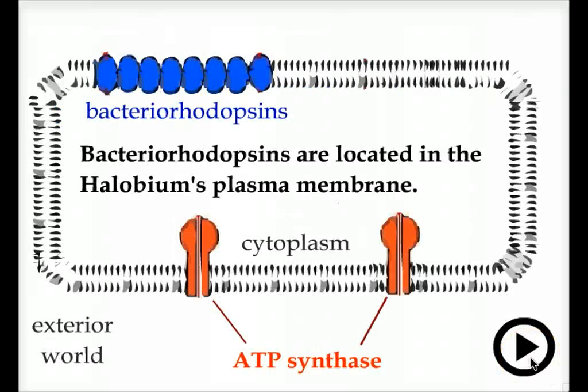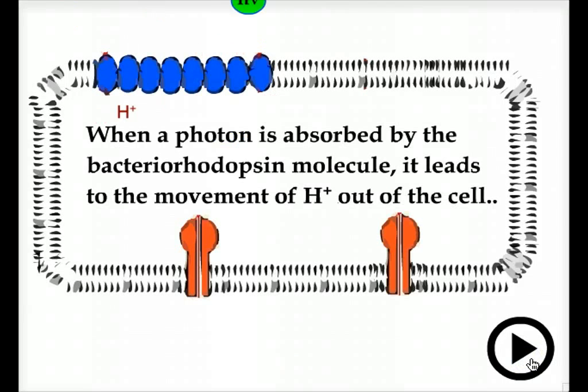If we look at the details of the cell structure, we would see that bacteriorhodopsin molecules are embedded in the membrane and they are located in the outer plasma membrane of the cell. When a photon is absorbed by the bacteriorhodopsin molecule, it leads to the movement of hydrogen ions outside of the cell.